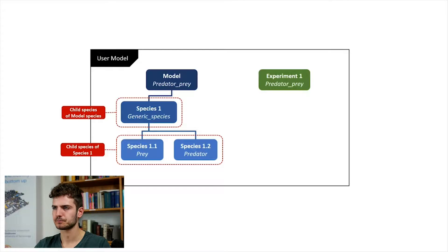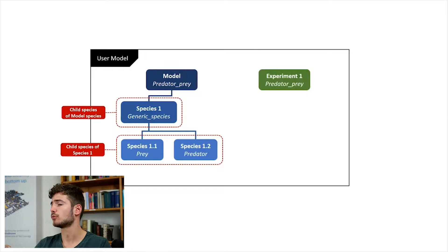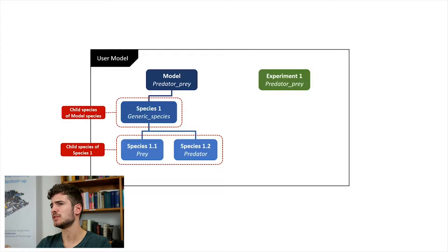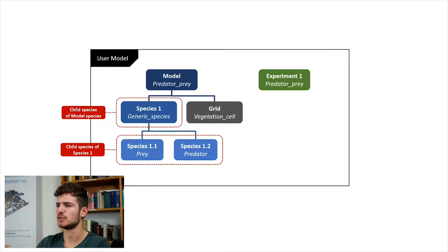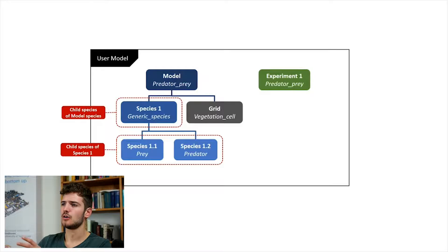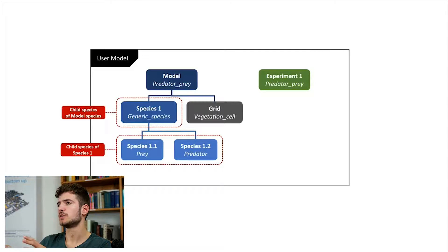For instance, we can define moving, eating and reproducing in the generic species, and both predator and preys will inherit this behavior. It's the same concept as specialization in object-based programming, as in Python. The last type of agent we saw in the simulation was the vegetation cell, which is part of the grid species, and the grid species is also a child species of the model species.